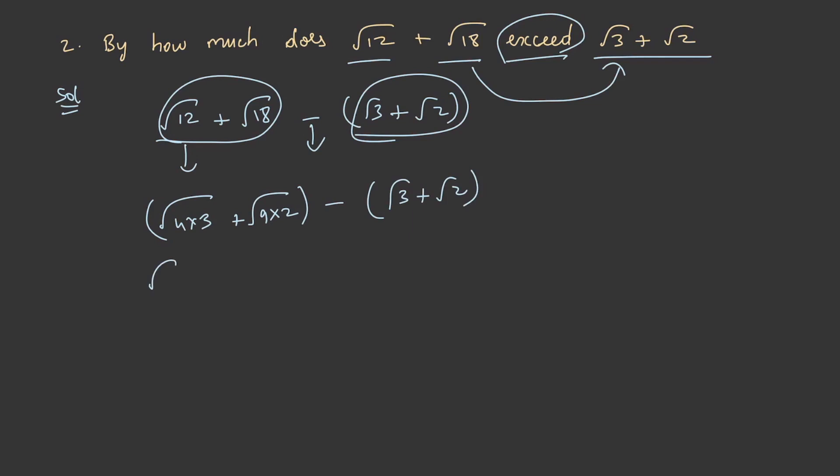As we know, √4 = 2 and √9 = 3. By substituting, equation 1 becomes 2√3 + 3√2 - √3 - √2.